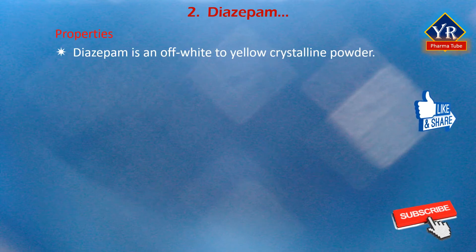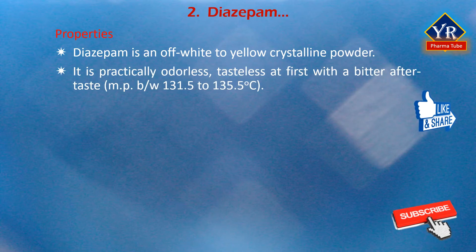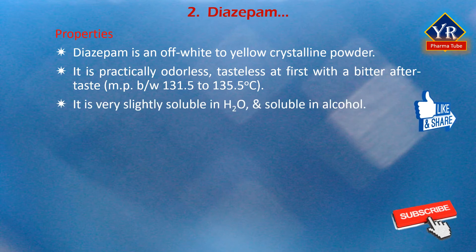Diazepam is an off-white to yellow crystalline powder. It is practically odorless and tasteless at first, with a bitter aftertaste. It has a melting point between 131.5 to 135.5 degrees centigrade. It is very slightly soluble in water and soluble in alcohol.